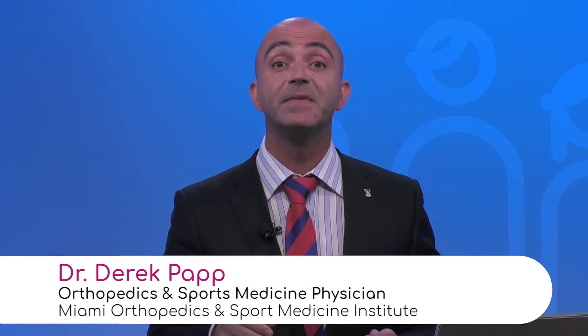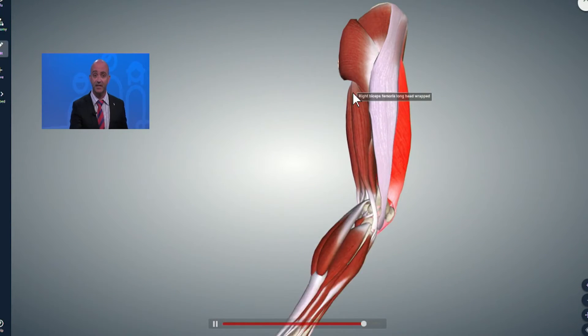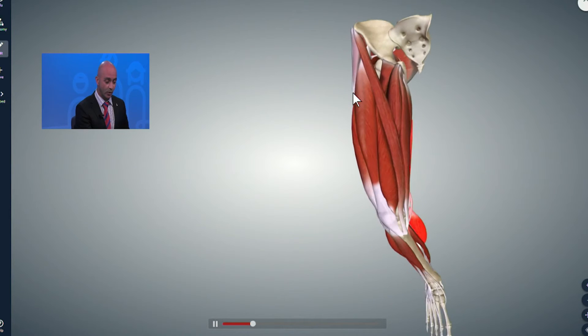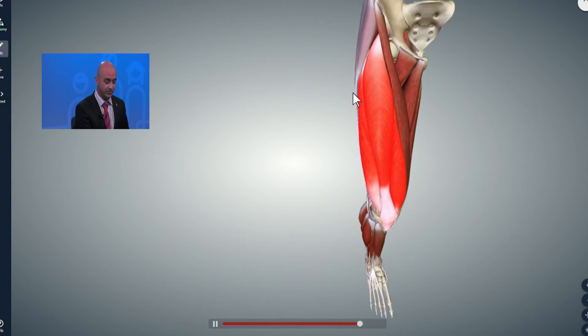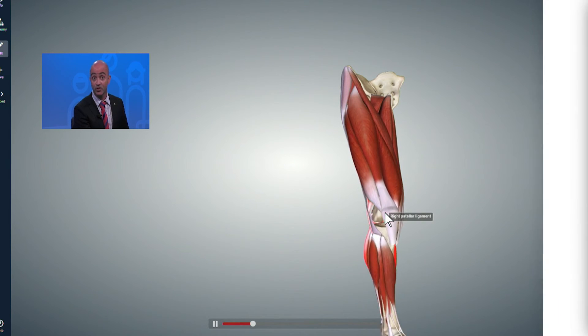As you go down the muscle, same thing - you have another myotendinous junction where the muscle ends and the tendon begins. And then also what can happen is you can rip the tendon right off the bone. Again, that's more common in the quadriceps than it is in the hamstring, although you do see it every now and then where the hamstring inserts onto the tibia or your shin bone.